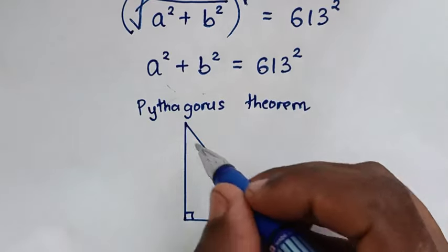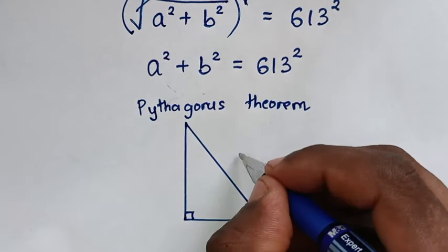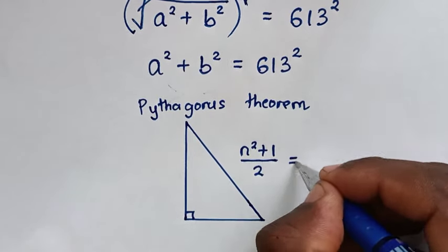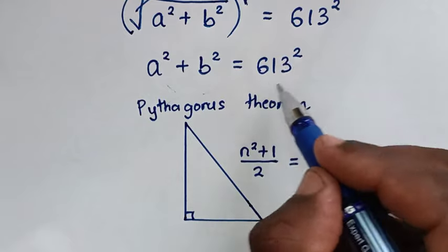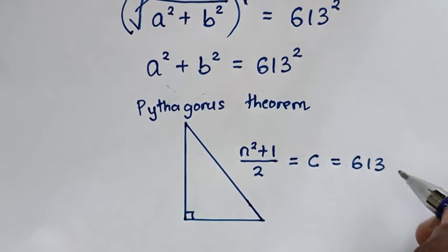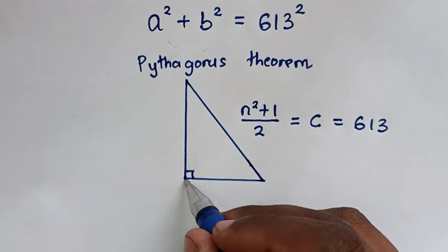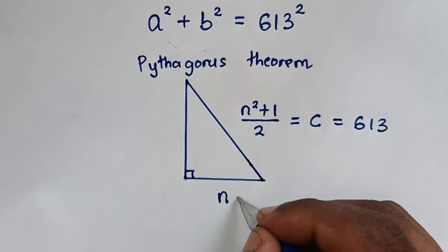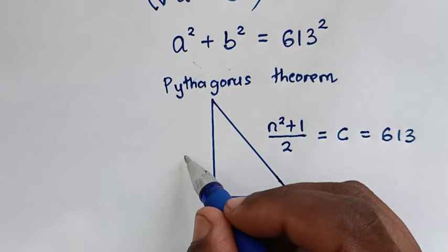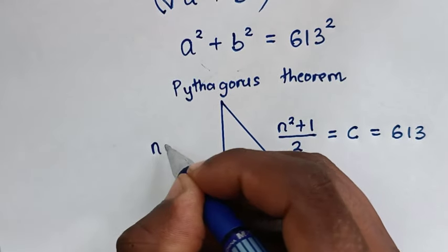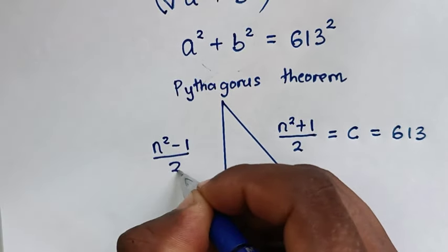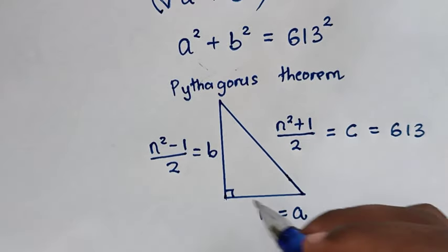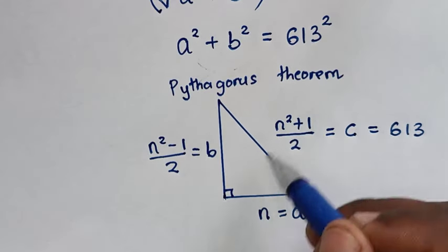From this right angle triangle, the side c in terms of n is (n squared plus 1) over 2. We have c equal to 613. The side a in terms of n is simply n, so n is equal to a. And the side b in terms of n is (n squared minus 1) over 2. So finding a plus b will be easier by using this parameterization in terms of n.